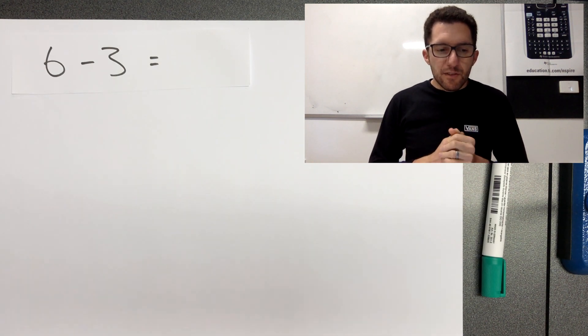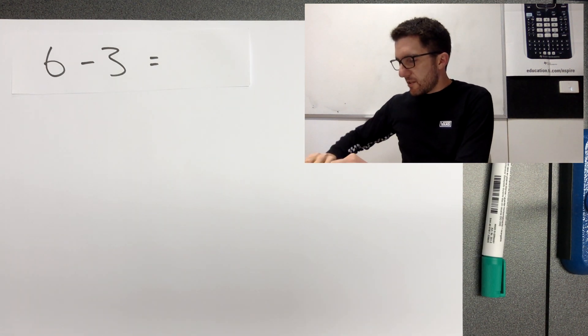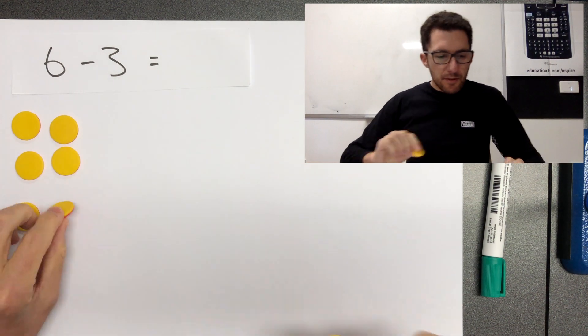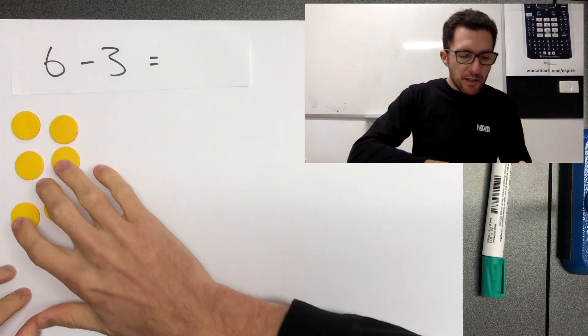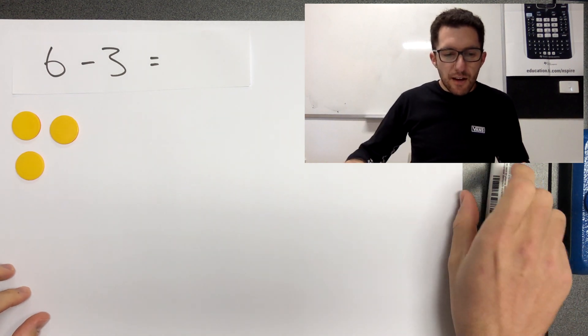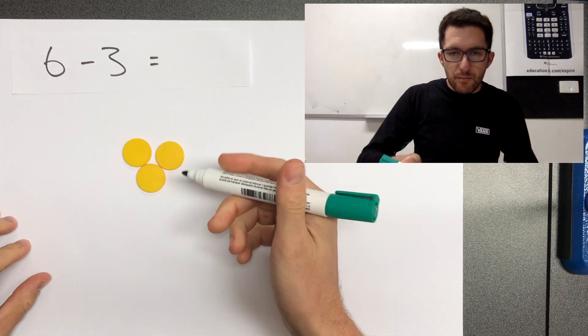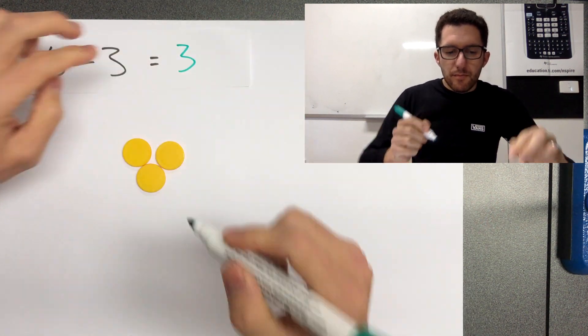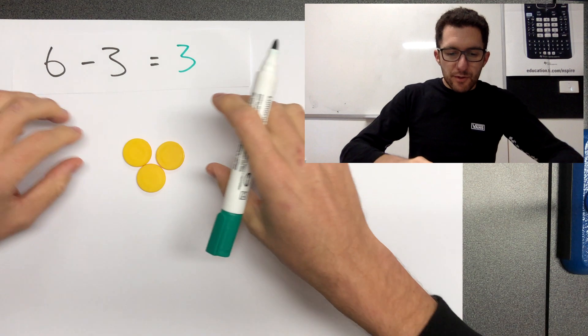Okay, how about this one here? Six take three. So six counters take away three and we're left with the value of these is three, isn't it? Hopefully pretty straightforward so far.